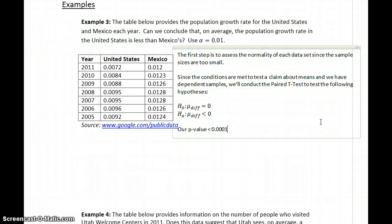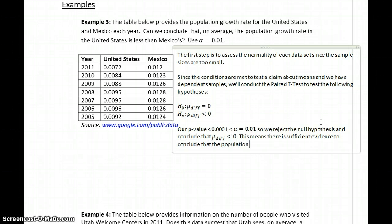So our p-value is less than 0.0001, which is less than our value for alpha, which in this case was 0.01. So we reject the null hypothesis, and conclude that mu diff, or mu d as StatCrunch says it, is less than 0. This means there is sufficient evidence to conclude that the population growth rate in the United States is less than the population growth rate in Mexico.